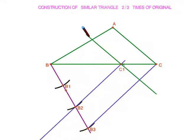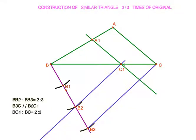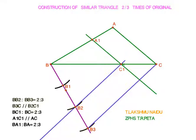Now triangle A1BC1 is the required triangle. Since BB2 is to BB3 equals 2 is to 3, and B2C1 is parallel to B3C, by the basic proportionality theorem BC1 to BC is also 2 to 3. And since A1C1 is parallel to AC, BA1 to BA is also 2 to 3. So triangle A1BC1 is 2 by 3 times of triangle ABC.